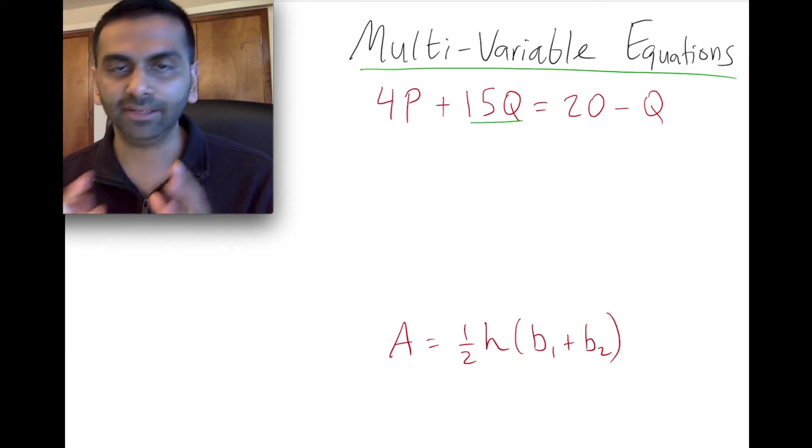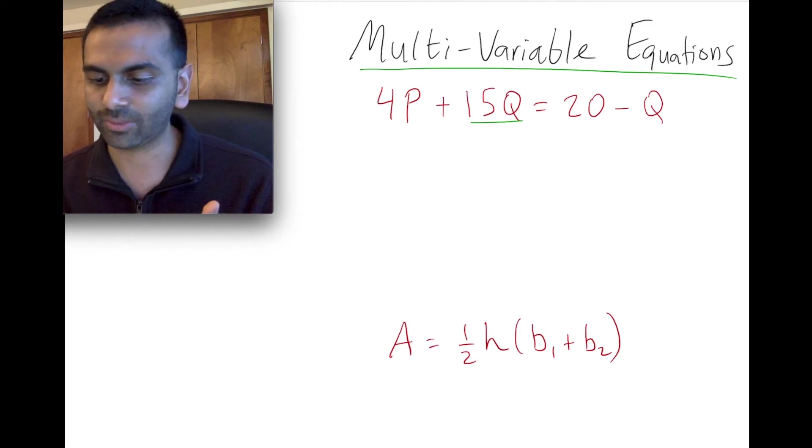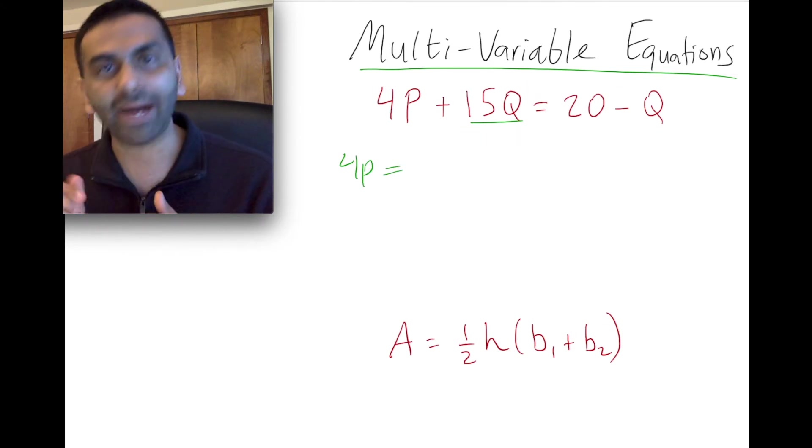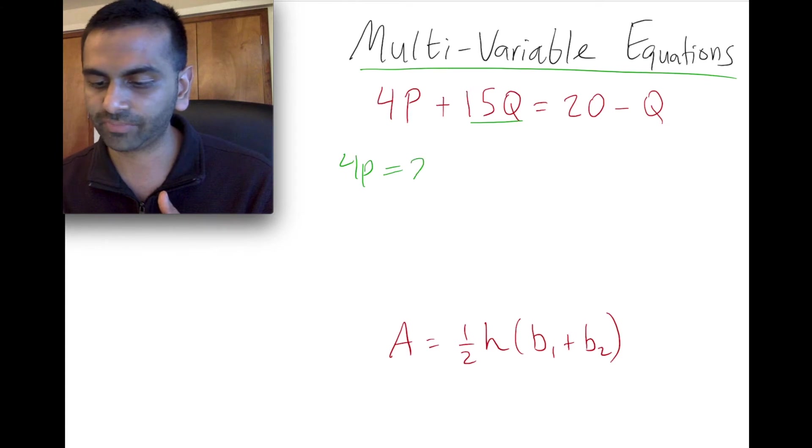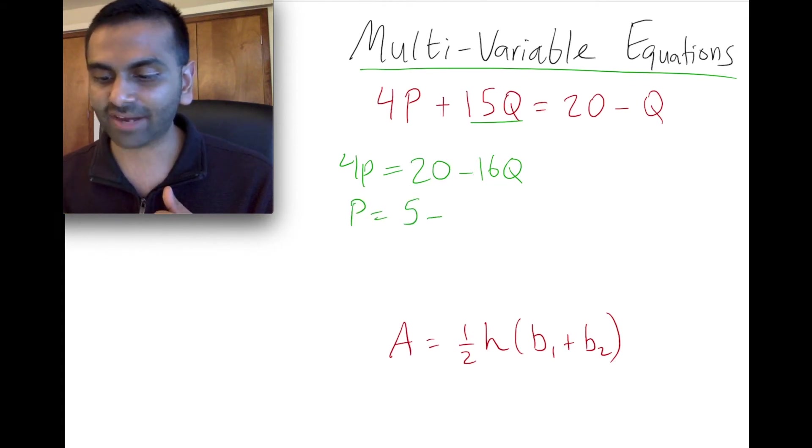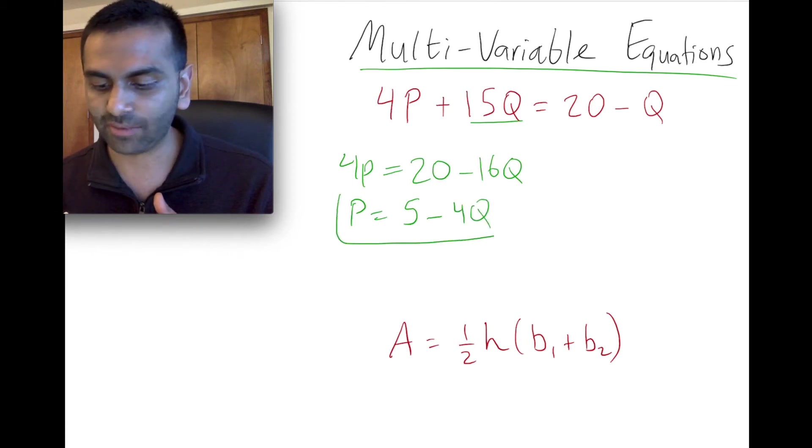So any term without a P, we want to take to the other side. So we're going to subtract 15Q from both sides of this equation, and so we're going to be left with 4P equals, subtracting 15Q, we have negative Q here minus another 15Q is going to be, so it's 20 as is, and then minus 16Q. And final step, divide both sides by 4 to get rid of that in front of the P, and 20 divided by 4 is 5, and 16 divided by 4 is 4. And so there you have it.